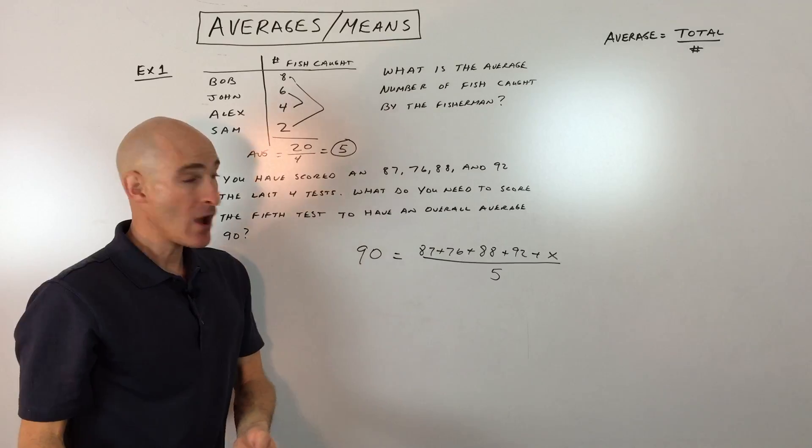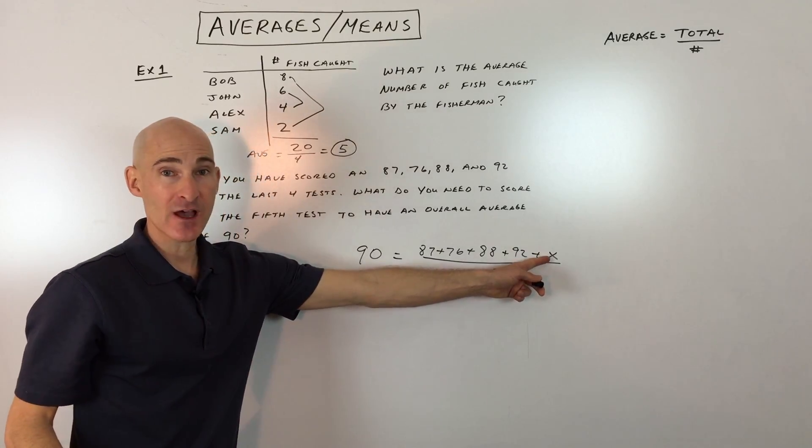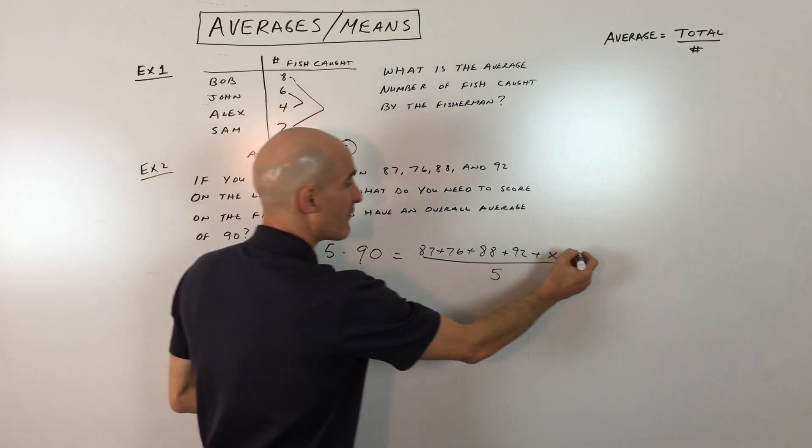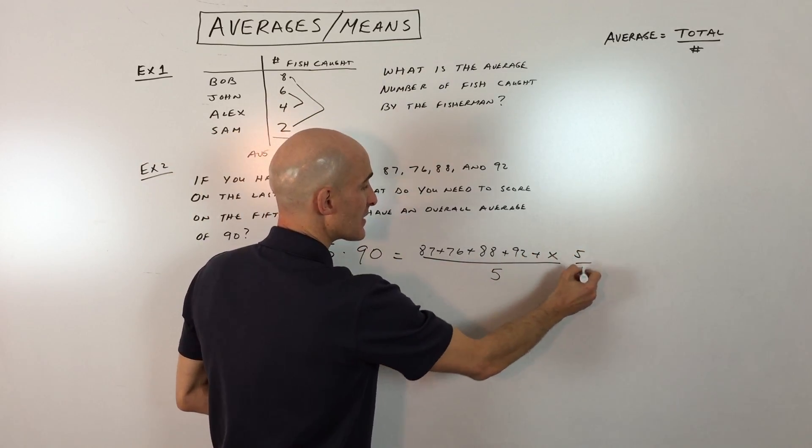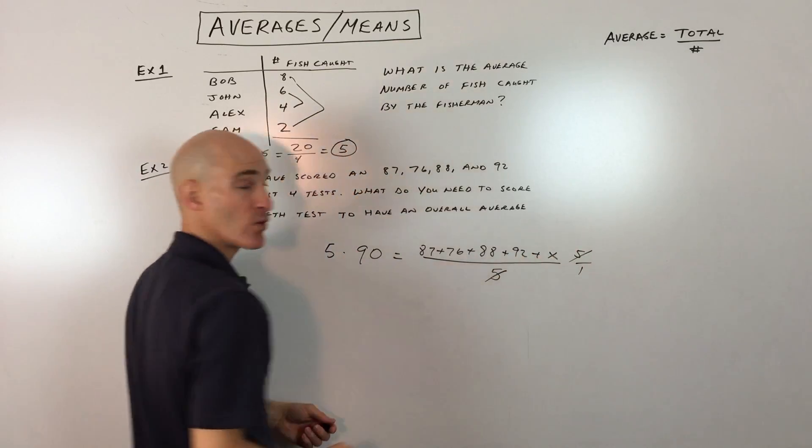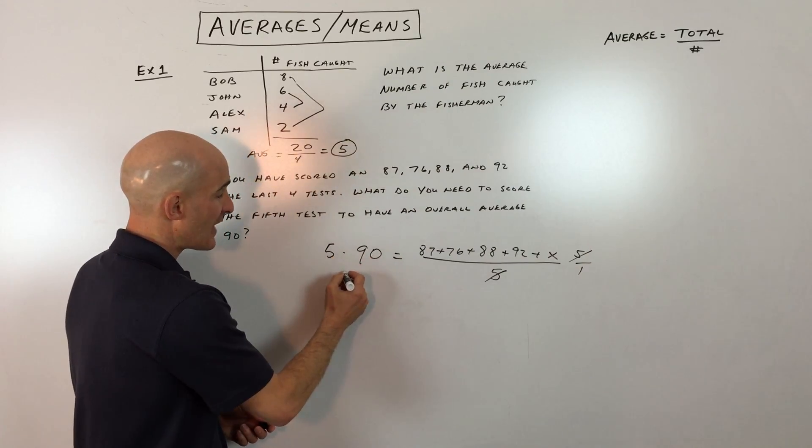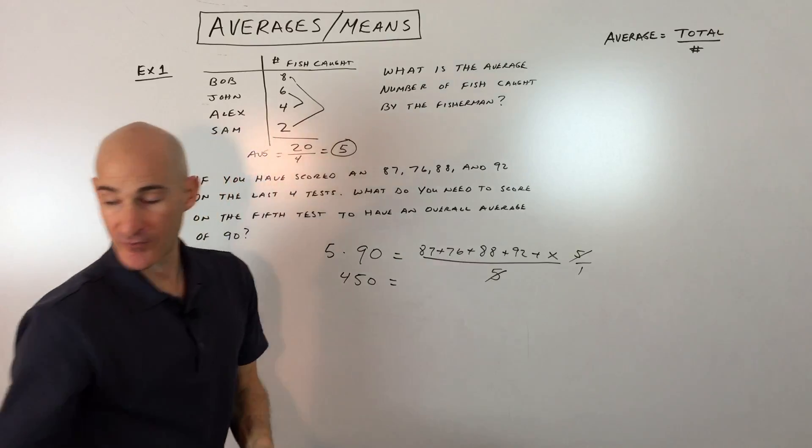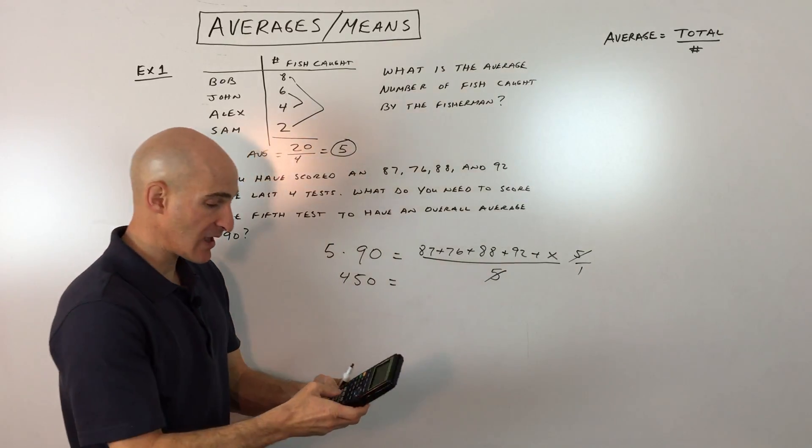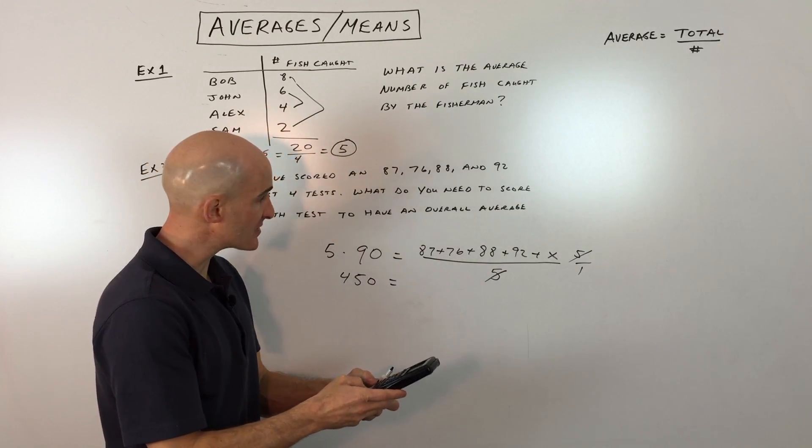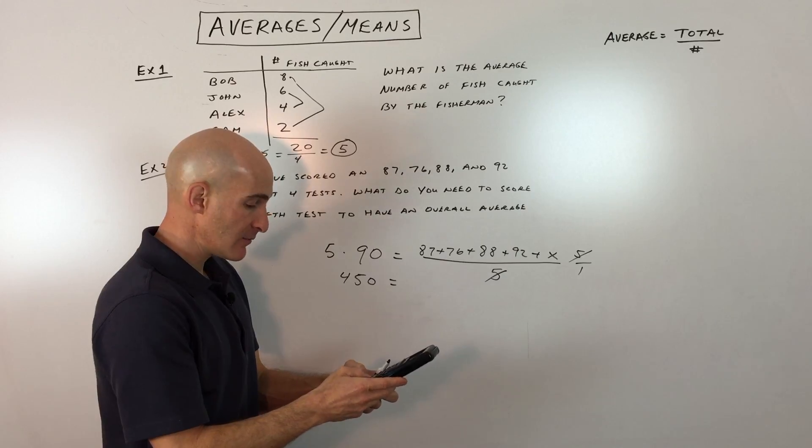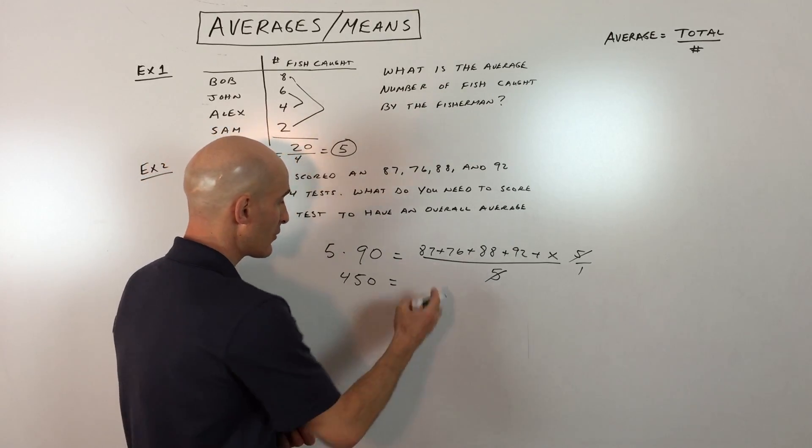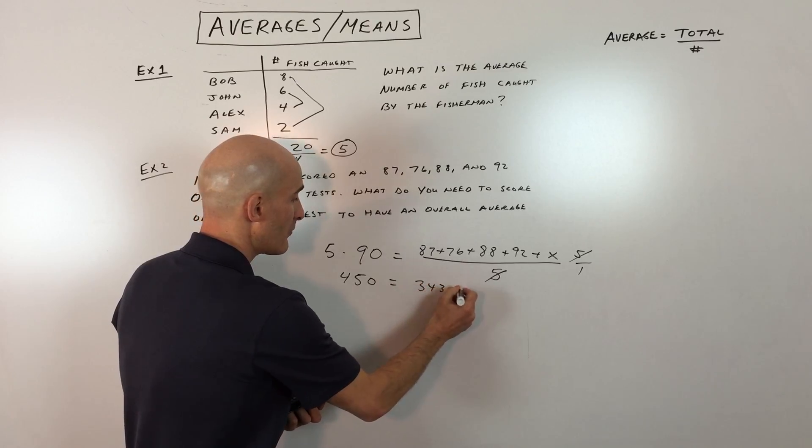Okay. So then what you want to do now is you're trying to get the X by itself, that unknown test. What you can do is multiply both sides of the equation by five. This is like five over one. So these are going to cancel each other out. Five times 90 is 450. And then let's go ahead and total these up. Of course, you can use your calculator. So let's do that. 87 plus 76 plus 88 plus 92. That's 343. Okay. 343 plus X.